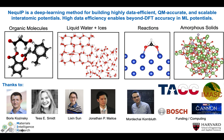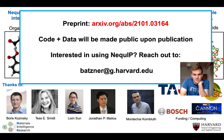In summary, NEQUIP is a deep learning method for building highly data-efficient, QM-accurate, and scalable interatomic potentials. The high data efficiency allows us to move beyond DFT accuracy in machine learning potentials. We've shown applications to organic molecules, liquid water and ices, catalytic reactions, amorphous solids, and lithium diffusion. I'd like to thank Boris (my advisor), our collaborators Tess, Lishin, Jonathan, and Mordecai, as well as our funders and computing providers. The preprint is available on arXiv; code and data will be made public upon publication. If you're interested in using NEQUIP, please send me an email.